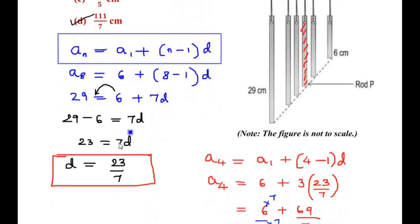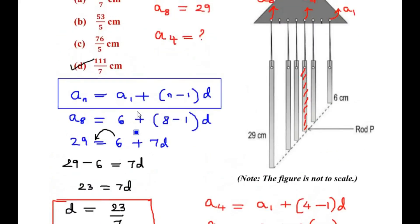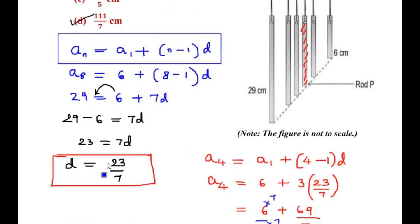First we have to find out the common difference by using your 8th term. And then after you got the common difference, find out the length of the 4th rod.